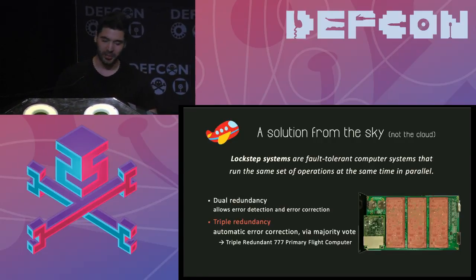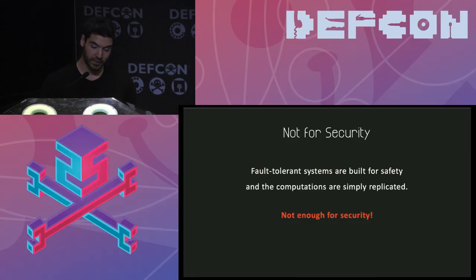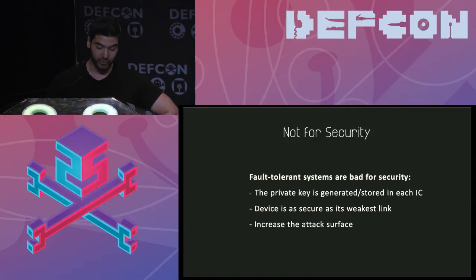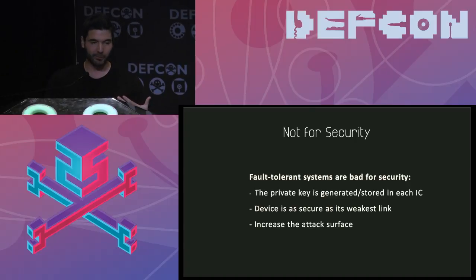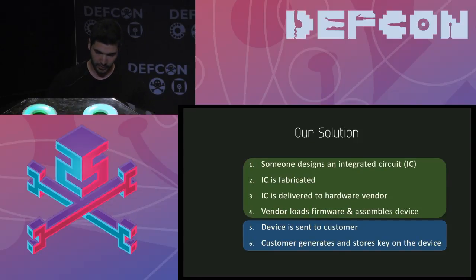This is actually used in autopilots on commercial aircraft. The problem with fault tolerant systems is they are built for safety and do their job well for that, but for security they don't transfer well at all. They are actually bad for security because you end up with a system that has three processors storing your secret key - if one processor is compromised, you are prone to attacks. Instead of improving security, you increase your attack surface.